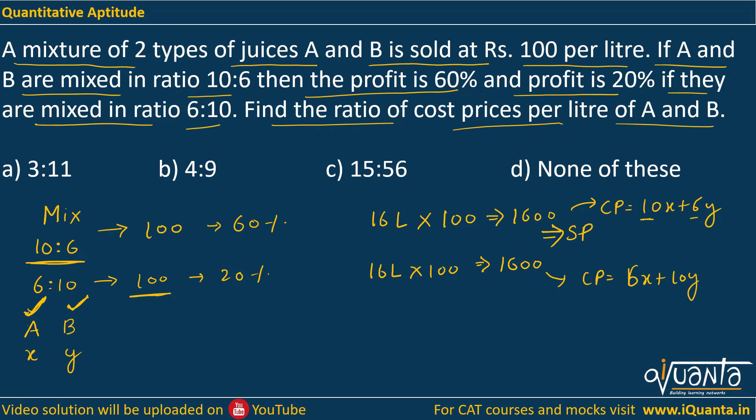So in the first case we can write SP equals to 1.6 times the CP. Why 1.6? Because there is 60% profit, so this will be the multiplying factor 1.6 times CP, which is 10x plus 6y. In the second case also SP is 1600, but in that case it will be 1.2 times CP because we have 20% profit. So multiplying factor will be 1.2 into CP, and CP in the second case is 6x plus 10y.